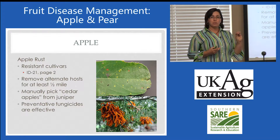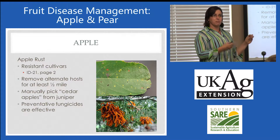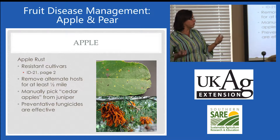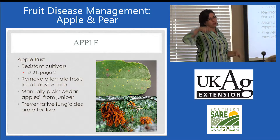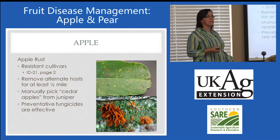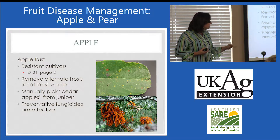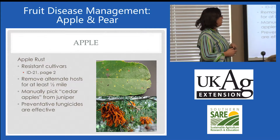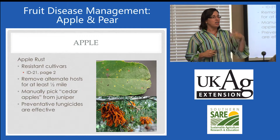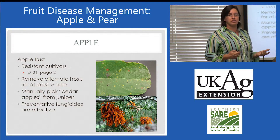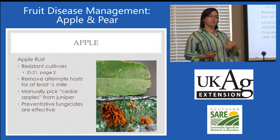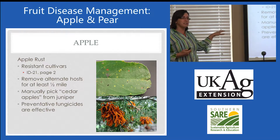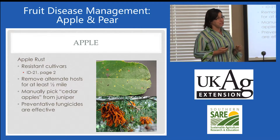Manually picking those cedar apples can help, because sometimes homeowners just won't remove the prized juniper. Removing those cedar apples by hand, depending on how tall the tree is — it seems like the biggest galls are always the highest up — but hand-pick any that you can. Then using preventative fungicides if homeowners choose to do so. If there's an old apple — I've heard that a lot since I've been here in Kentucky, 'I got this from my grandfather' or 'I grafted it from somewhere' — if we're not going to plant a resistant cultivar, preventative sprays are going to be necessary. That's a choice homeowners are going to have to make.